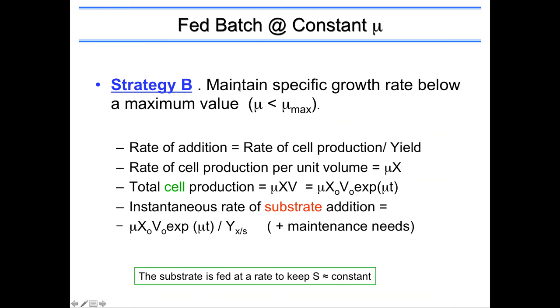An interesting thing about it is you can actually maintain a specific growth rate below the maximum value. So you could actually keep mu at a constant rate, but that constant rate will not be its maximum growth rate. So this would be very useful for trying to assess, for example, if your product formation is dependent on the rate of growth by actually really growing them at different growth rates by setting your pump value to different set points as well.